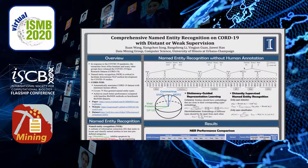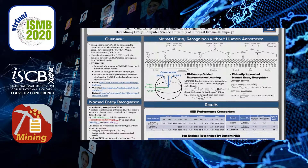Now let's take a look at our method, called Named Entity Recognition without Human Annotation. Basically, it only takes the raw corpus and some human input dictionaries, and then tries to recognize new types defined by the entity sets in the dictionary. This dictionary can be some existing knowledge bases or new types specifically defined by human input seeds. Our method contains two steps: first is dictionary-guided representation learning, and second is a distantly supervised BioNER model.